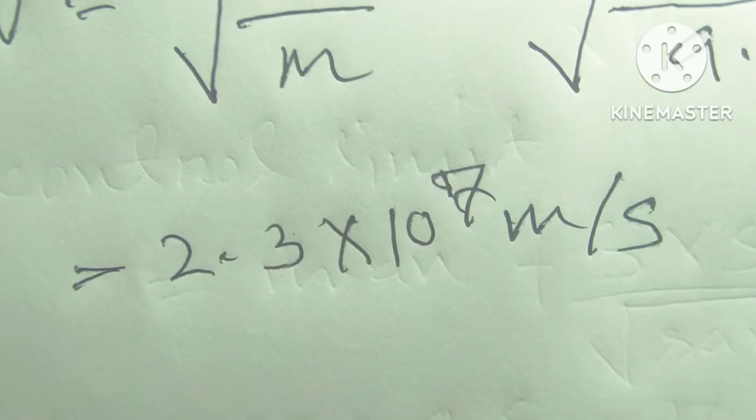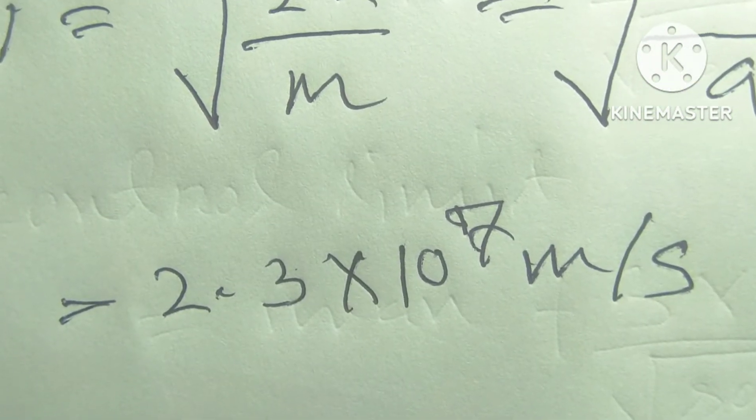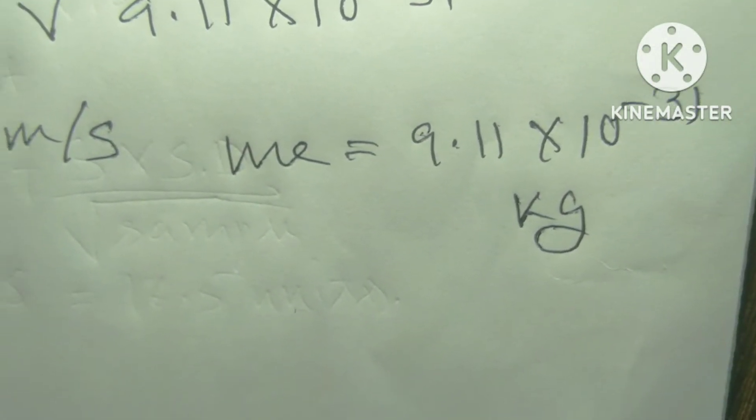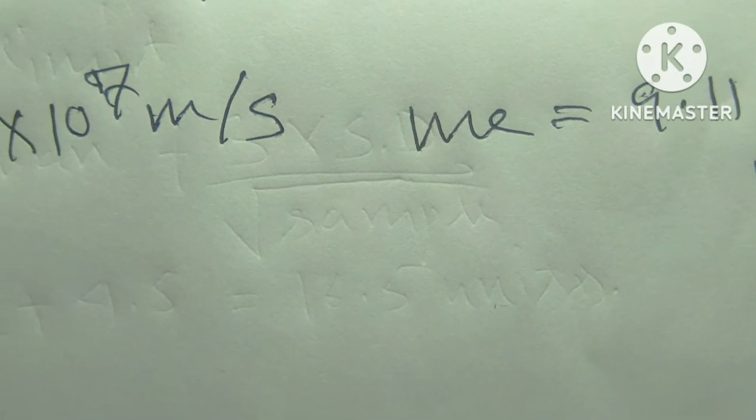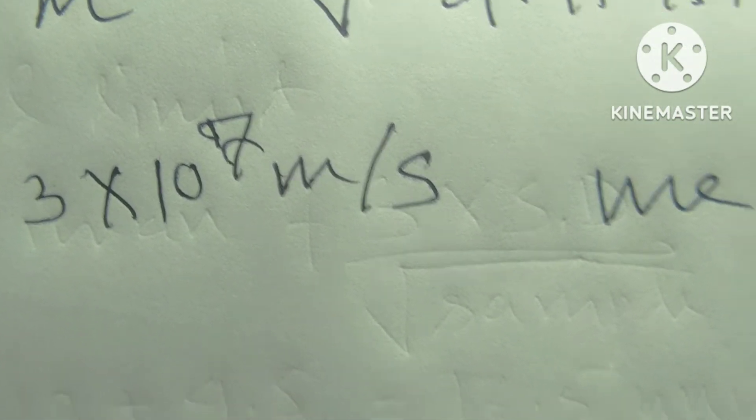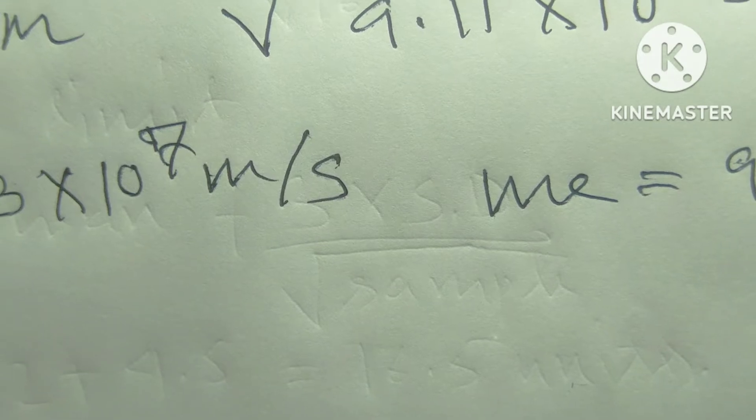When a charged particle enters a region of uniform magnetic field at right angle with a speed V, the magnetic field forces it to move in a circular path of radius R. This force, whose magnitude is QVB, is the centripetal force.